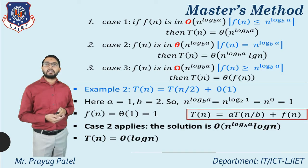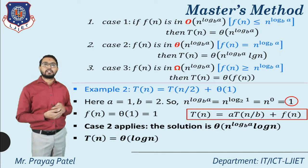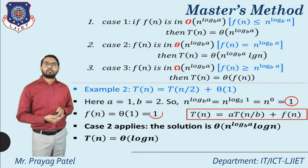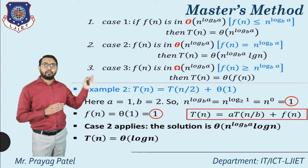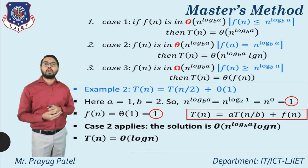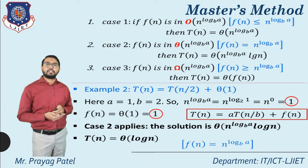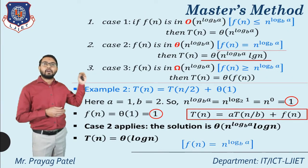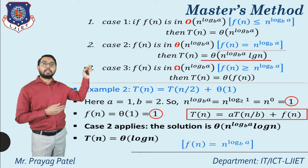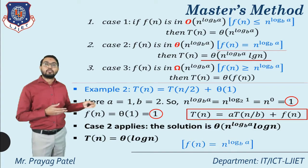f(n) = Θ(1), which is constant value 1. So n^(log a base b) = 1 and f(n) = 1; both values are equal. Apply case 2: T(n) = Θ(n^(log a base b) · log n). Since log 1 base 2 = 0, the n term becomes n^0 = 1, leaving only the log n term. So T(n) = Θ(log n).